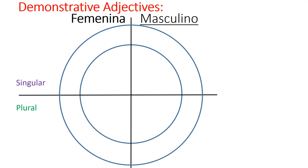You're gonna write a chart quartered into a feminine column and a masculine column, with the top row being singular and the bottom row plural. Then make two circles. The inner circle will have all the 'these' forms — things right here by me. The outer circle will have 'those' forms — things farther away. These are called demonstrative adjectives because they're adjectives we use to demonstrate something nearby or far: this phone, that book, those socks, these pencils.